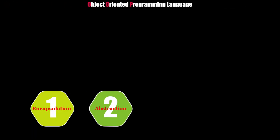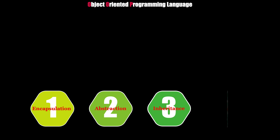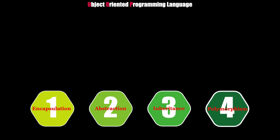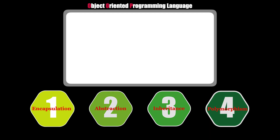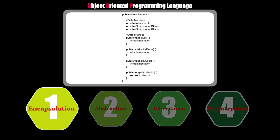We use OOP and there are four principles: Encapsulation, Abstraction, Inheritance, and Polymorphism. We already have a class. In a class, there are data members and methods — we use encapsulation in the same way.